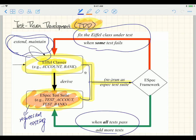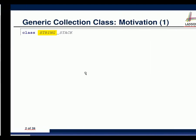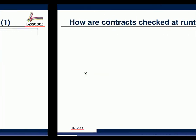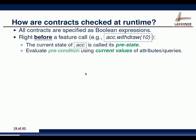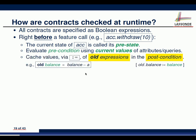Any questions about TDD? Good. We're now done with the TDD lecture. We went over this slide about how `old` expressions are actually cached depending on how you bracket your expressions. For example, `old current` versus `old current.twin` versus `old current.deep_twin` mean different things. Things will be done automatically for you, but you have to know the consequences of writing the `old` expression differently.